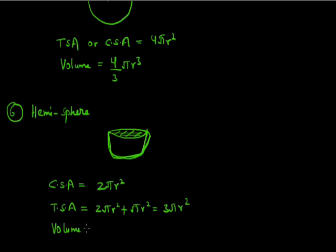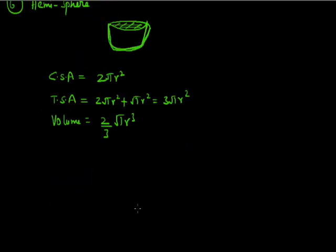For the volume of a hemisphere: since it is half of the sphere, the volume will also be halved. So the volume of the hemisphere is 2/3πR³. Using these formulas, we can easily find out the total surface area and the volume of these 3D figures.